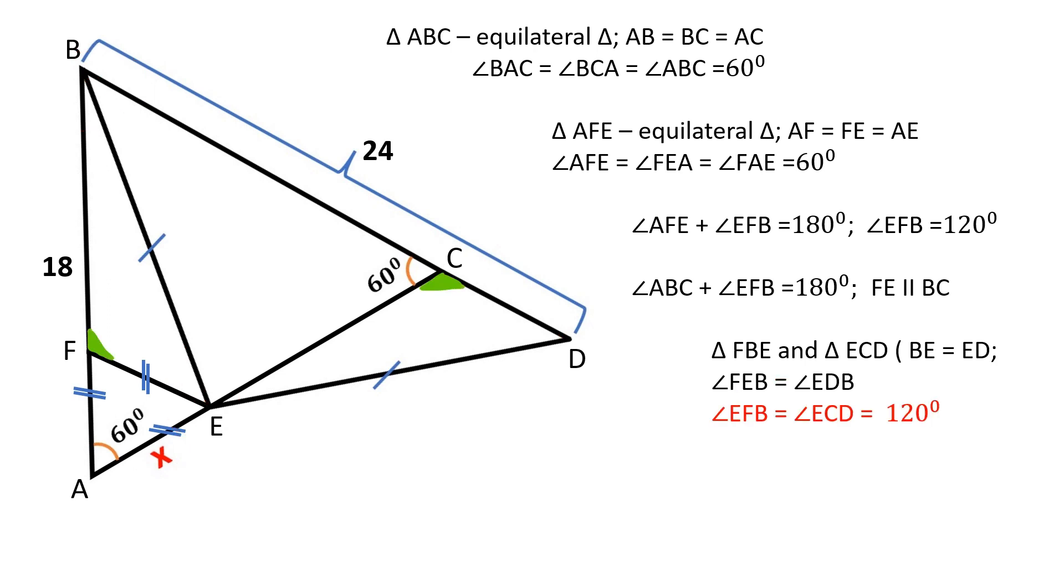Angles EFB and ECD are both equal to 120 degrees because these two angles are supplementary. And since these two pairs of angles are congruent, angle FBE is equal to angle CED.